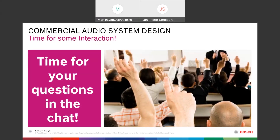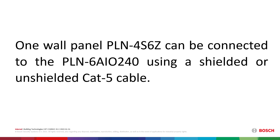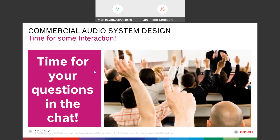Here is a question: how many PLN 6Z4S units can be connected to one Planar All-in-One panel? And another question: what is the difference between call stations — the LB1950 and the PLN 1CS — besides the different connectors?